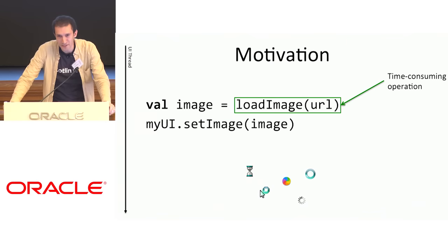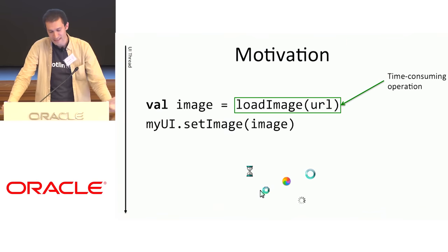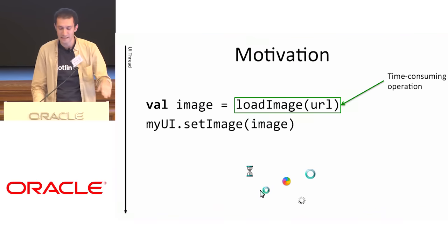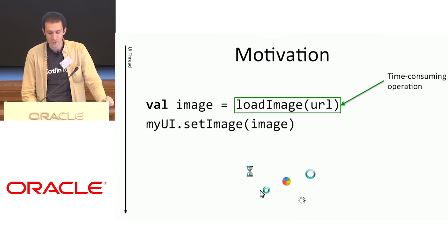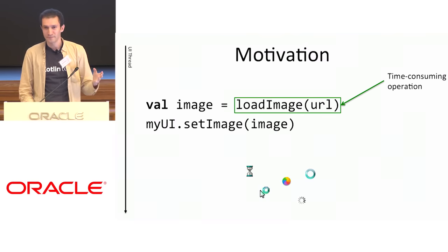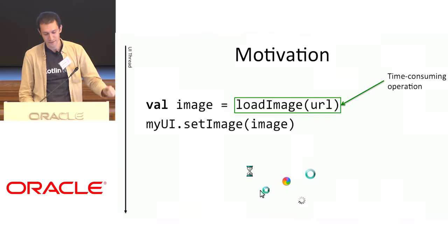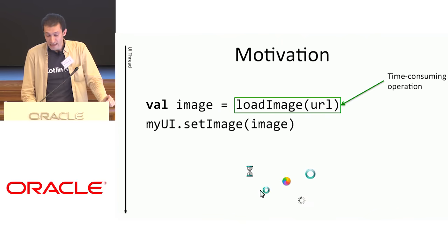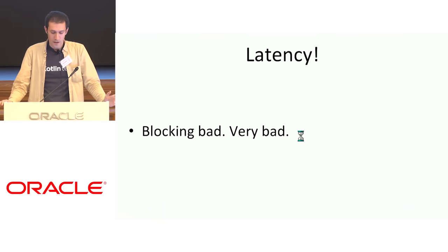I'm a grumpy user, frustrated looking at a frozen UI. This is why people want asynchronous computations. It's not only about UI, although the spinning indicators appear only there. Basically, we all want low latency, and blocking is bad.